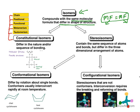Among isomers you have two different types. One is constitutional isomers, which are also known as structural isomers. The second one is stereoisomers. In constitutional or structural isomers, what is different? For all of them the molecular formula is same — keep that in mind. But they differ in the nature or sequence of bonding. That means atom-to-atom connectivity differs.